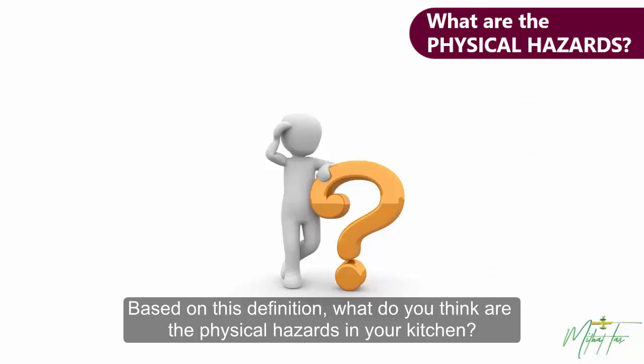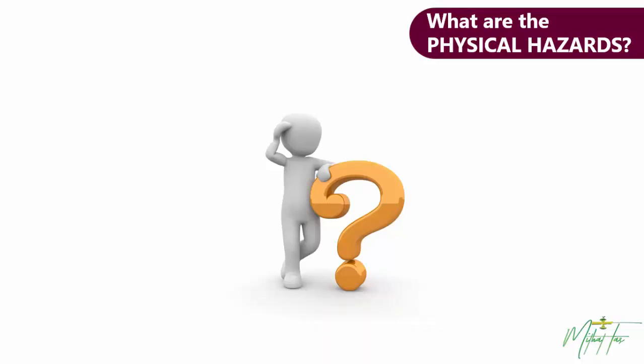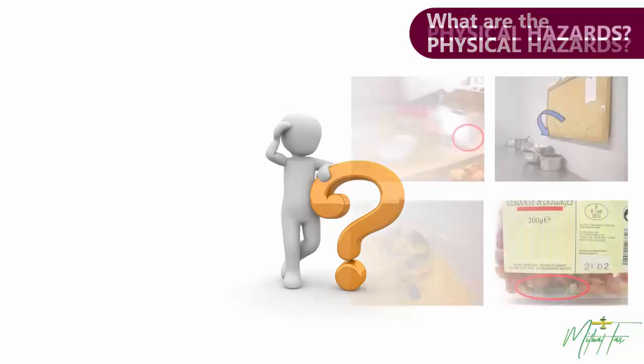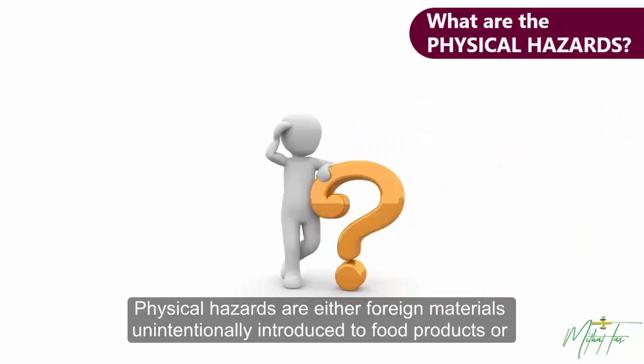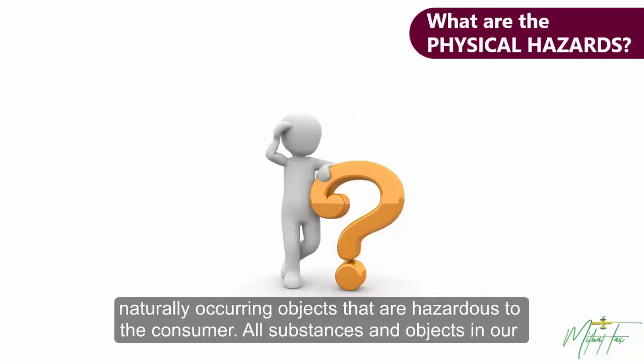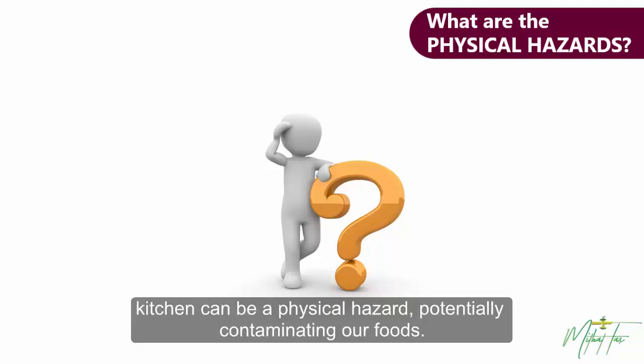Based on this definition, what do you think are the physical hazards in your kitchen? Physical hazards are either foreign materials unintentionally introduced to food products, or naturally occurring objects that are hazardous to the consumer. All substances and objects in our kitchen can be a physical hazard, potentially contaminating our food.